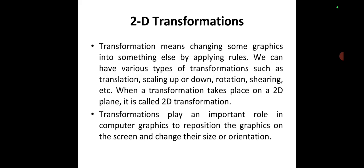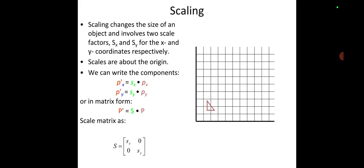We may apply several transformations like translation, scaling up and down, rotation, and shearing. When a transformation takes place in a 2D image, we consider it as a 2D transformation. Transformation plays an important role in computer graphics to reposition the graphics on a screen and change their size or orientation.